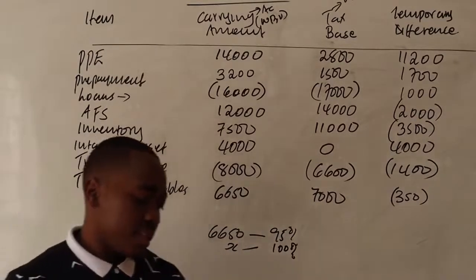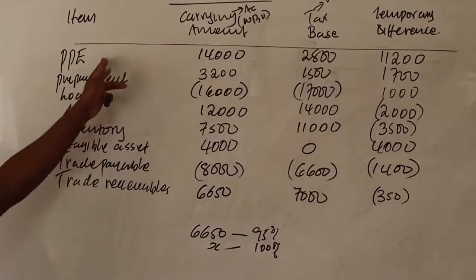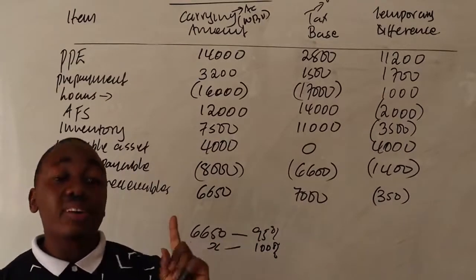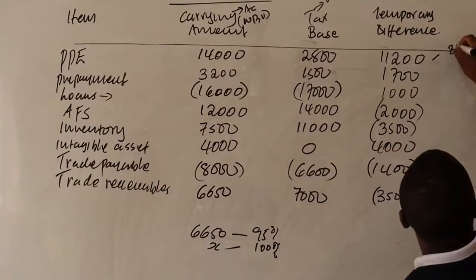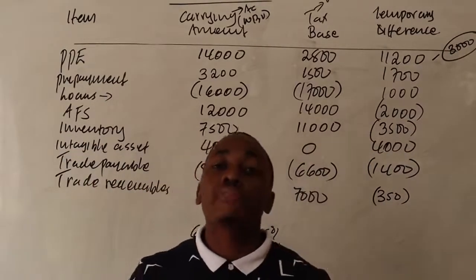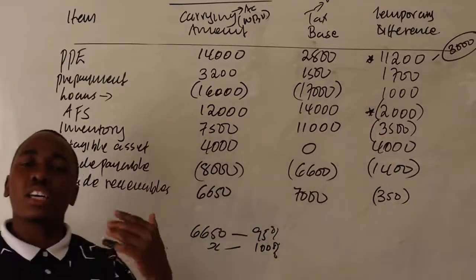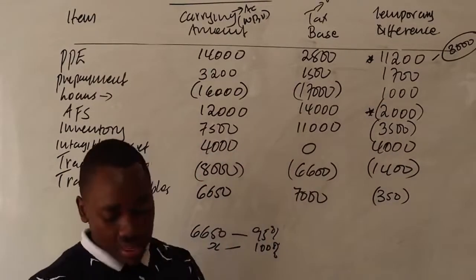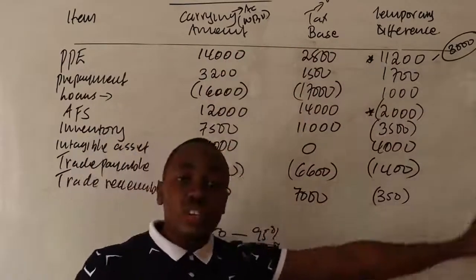Note seven: the building included in PPE was revalued during the year. The increase in value of 3 million does not affect the tax base. This gives us a 3,000 temporary difference arising from revaluation. Recall that revaluation changes for PPE and available-for-sale are subjected to special deferred tax treatment. Note eight: tax base of other items equalled carrying amount, so no temporary differences for those.